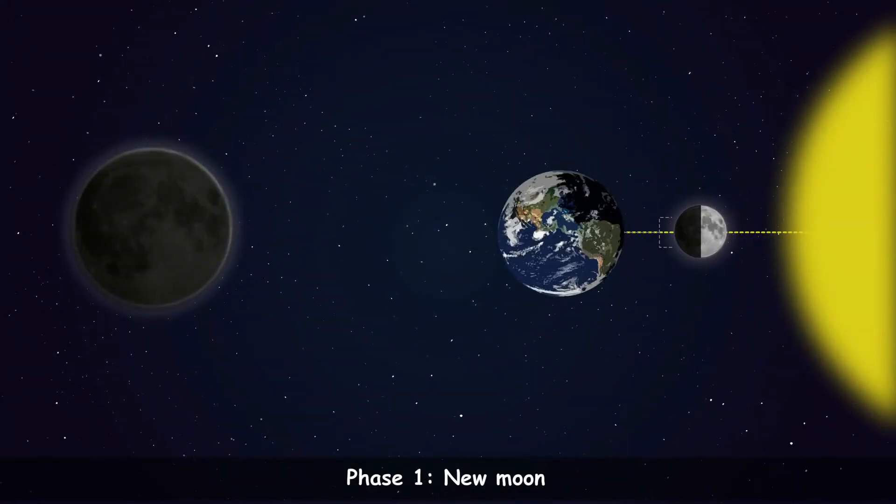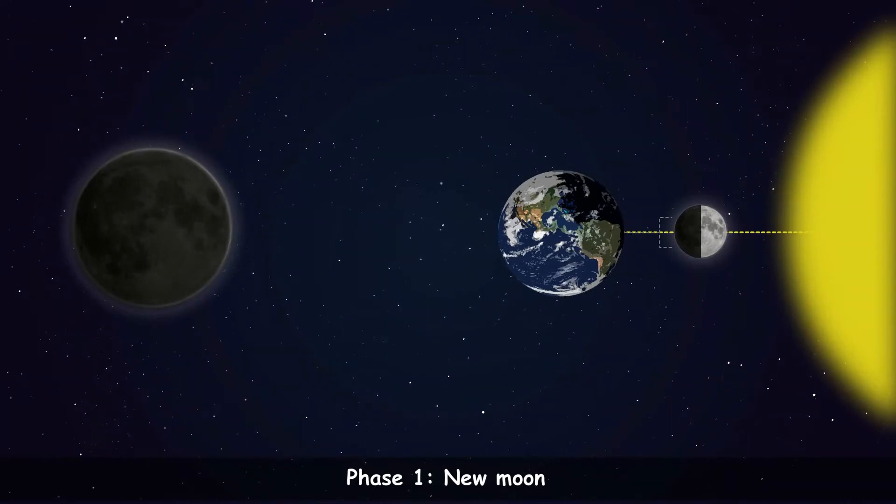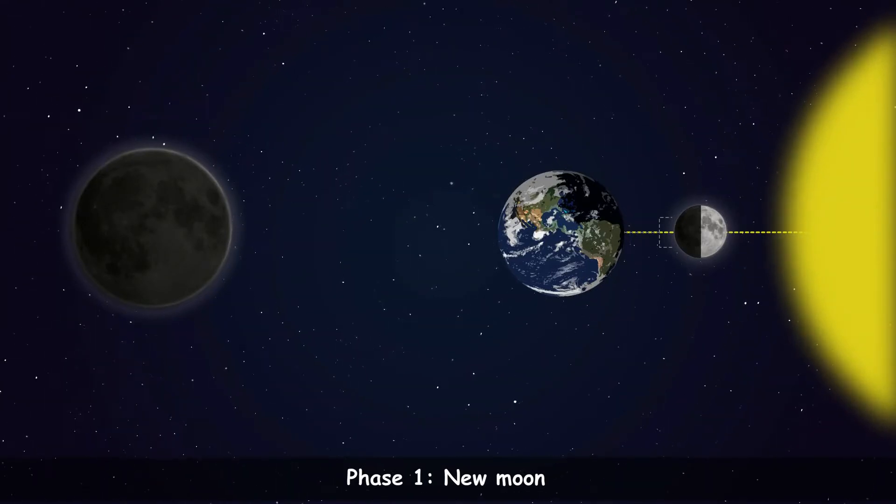Phase 1 is called the New Moon. In this phase, we cannot see any part of the illuminated half of the moon.